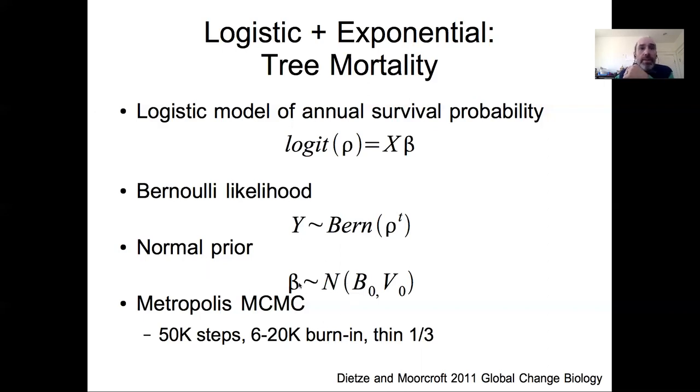I assumed a normal prior on the slopes and intercepts and I fit this using a Metropolis MCMC with 50,000 steps with 6 to 20,000 iterations removed for burn-in, and then thinned a third of this out to address autocorrelation.